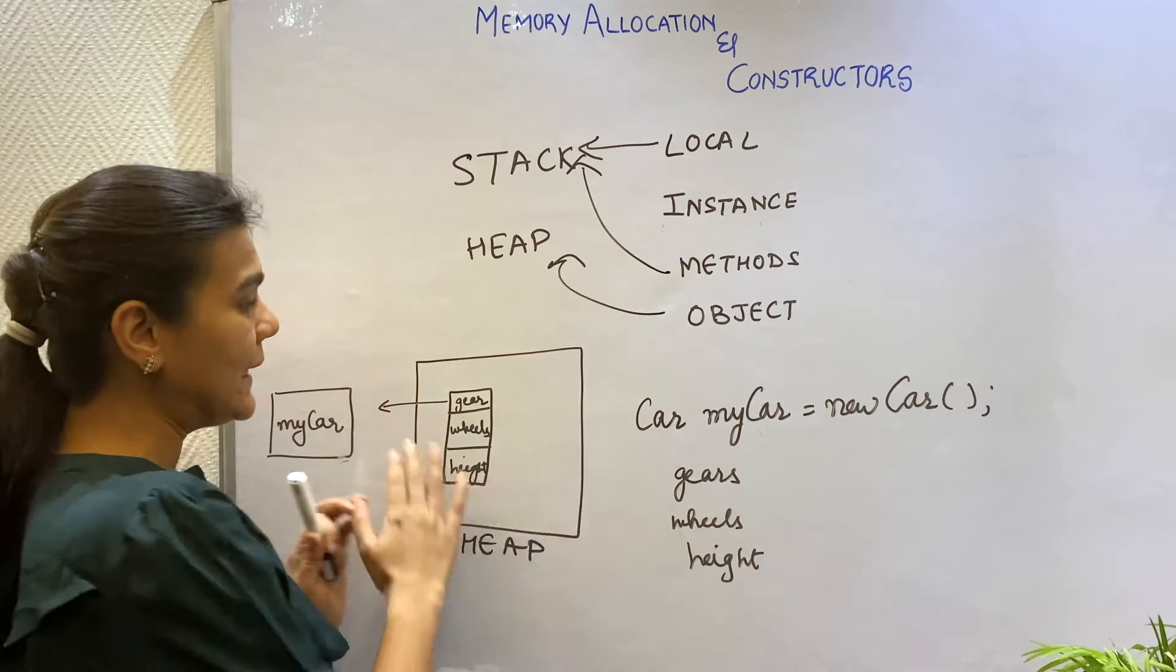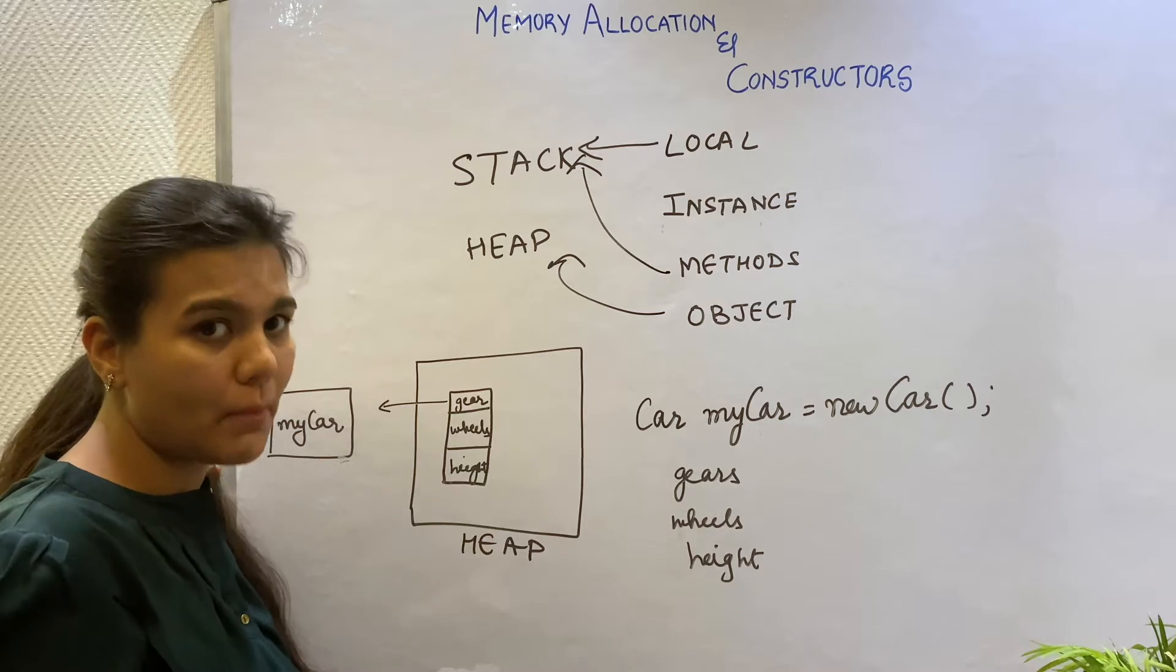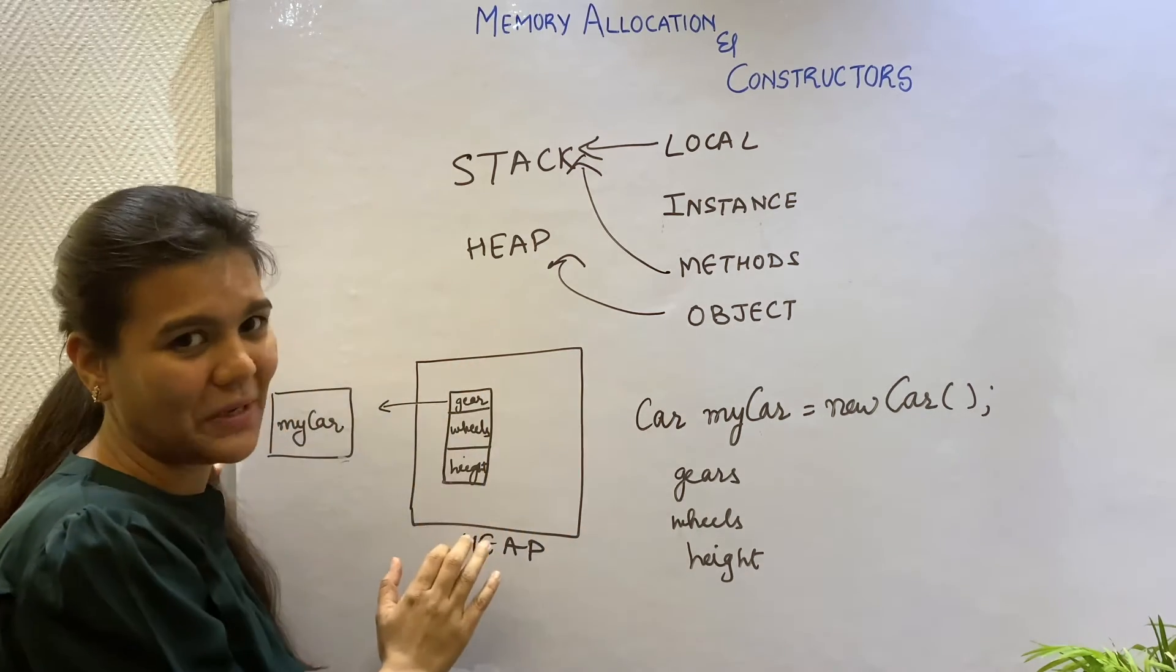So you can see in heap memory, the object always has a sufficient amount of memory to contain all its instance variables.